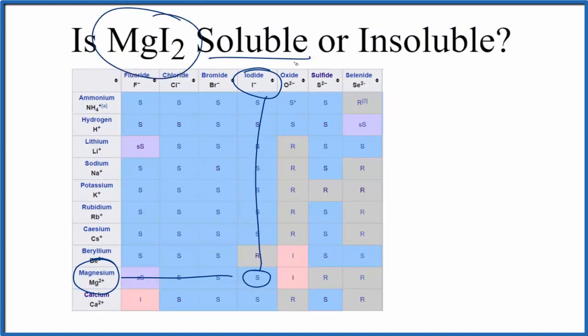So in answer to our question, MgI₂ is soluble in water. That means when you put it in water, you'll get Mg²⁺, that'll be aqueous, and you'll get two of these iodide ions, I⁻.